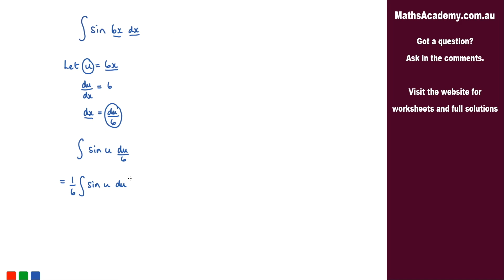When we integrate sine, we get negative cosine. So what I've got here is negative 1 over 6 cosine of u.